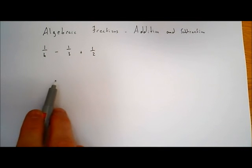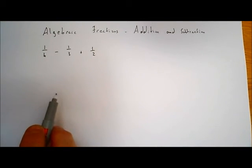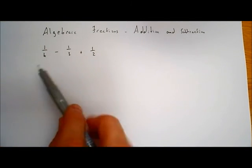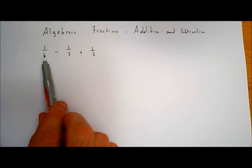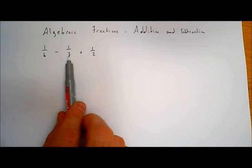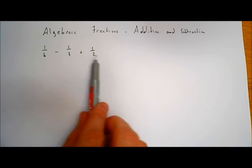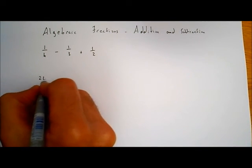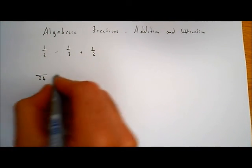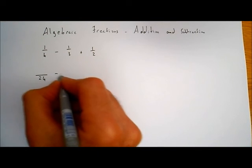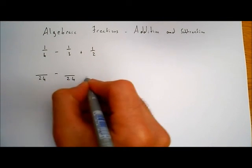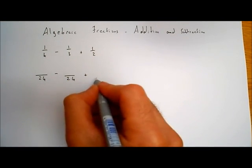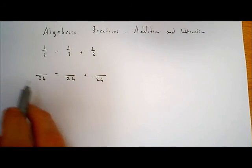So what we've got to do is find a common denominator. The easiest way to find a common denominator is to multiply all three. So if I multiply 4 by 3, I get 12, and 12 by 2, I get 24. So 24 is a common denominator. What I'm going to do is write each of them over 24, keeping whatever sign is in the middle.